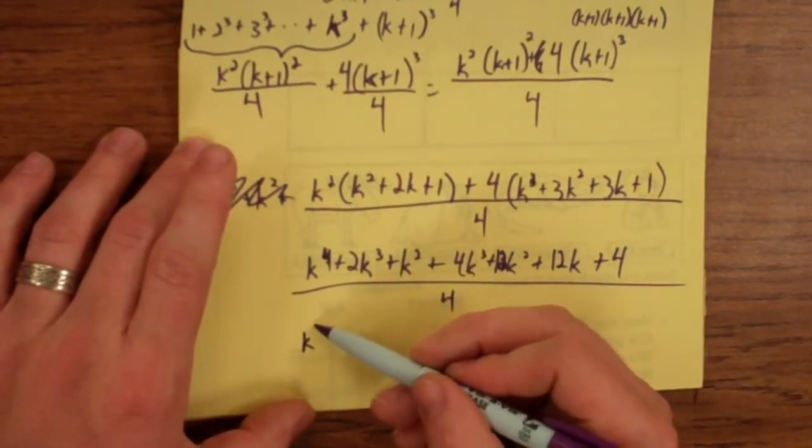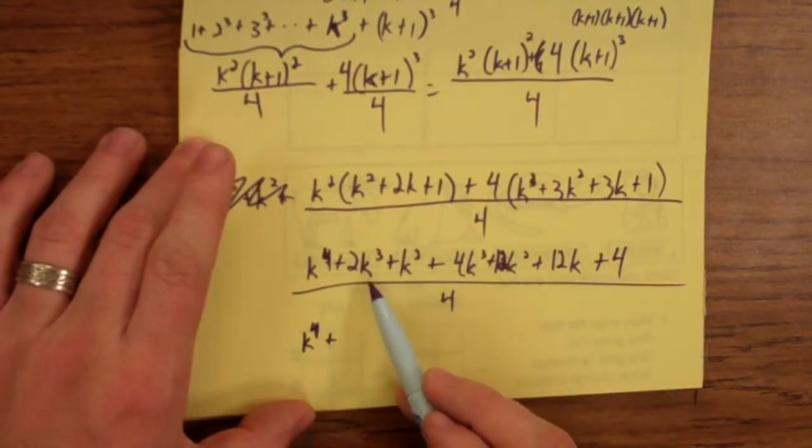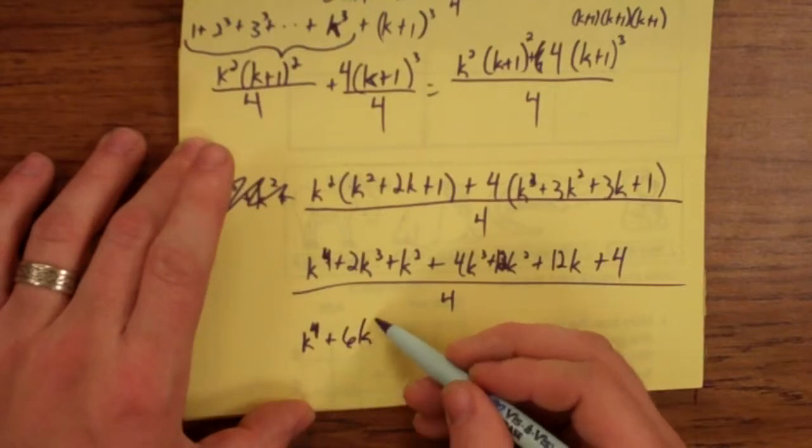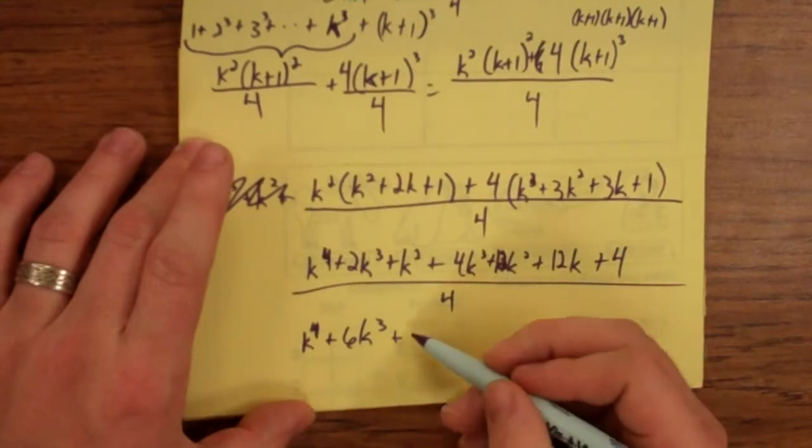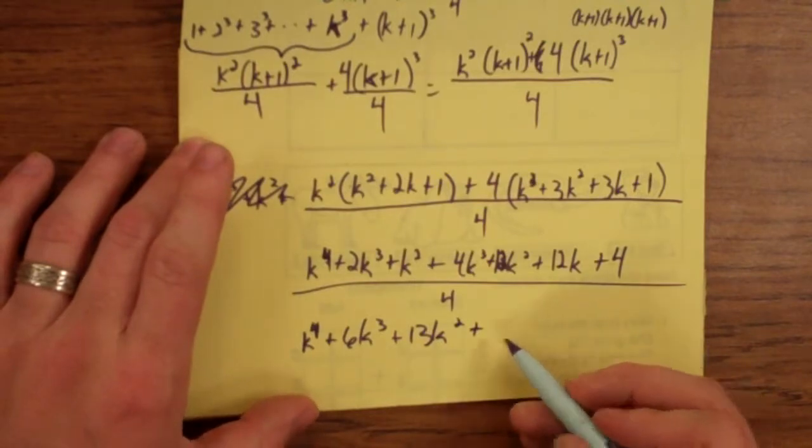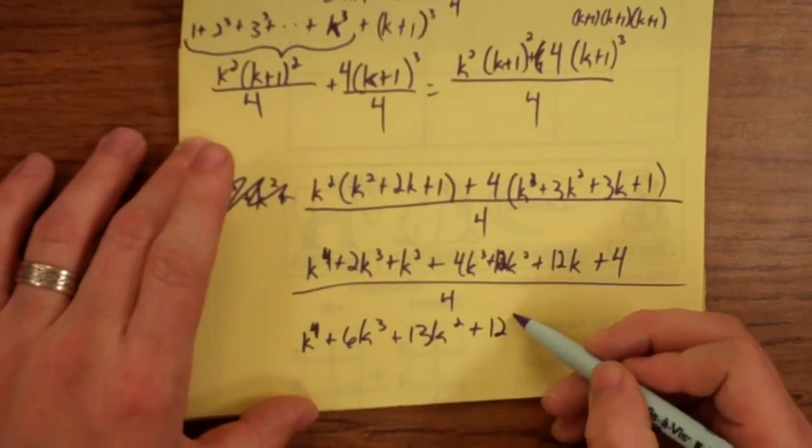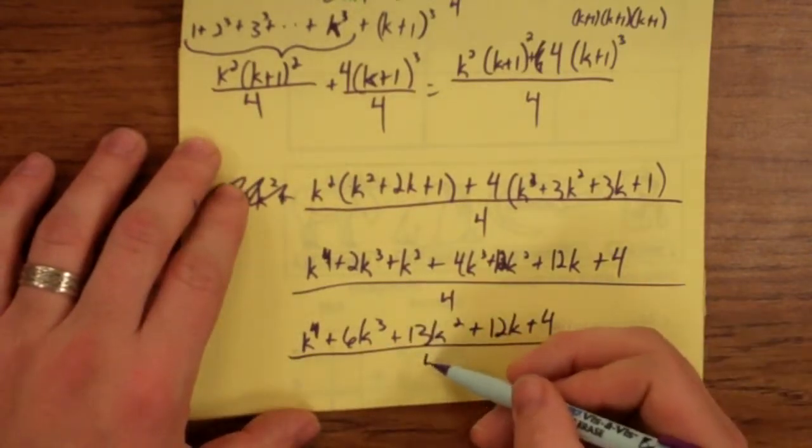This is combining like terms, k to the fourth plus, we got a k to the third term and a k to the third term, 4 plus 2, that's 6k to the third. Plus, let's see, the squared, so we got one of these and 12 of these, so 13k squared plus, just 12k, and plus 4, all over 4.